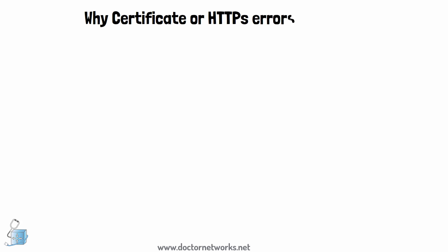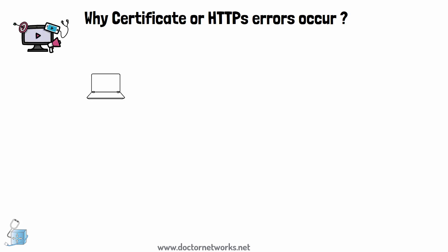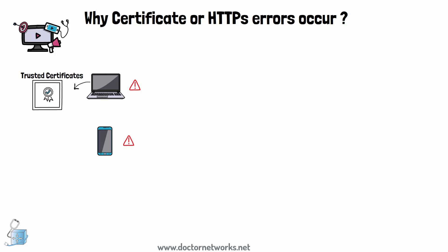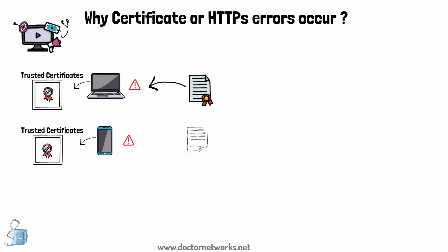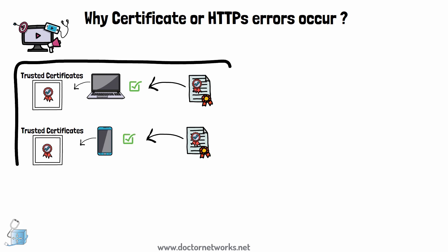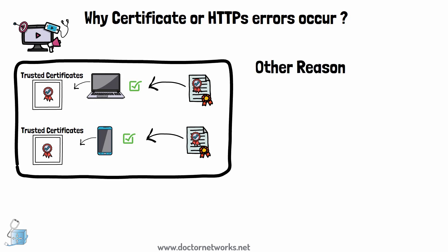Why do certificate or HTTPS errors occur? That's a large topic, but the most common reason is that your device — like Windows or Android — has trust issues. All devices have a trusted root certificate store containing trusted certificate authorities. Any certificate presented to the device that has a CA's stamp of approval will pass the untrusted root certificate error, which is the most common cause of HTTPS or certificate errors.